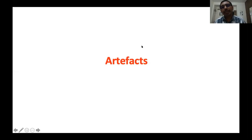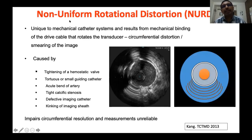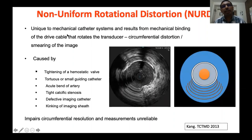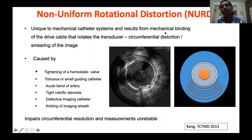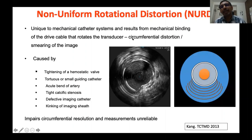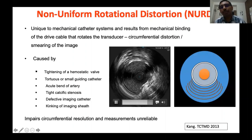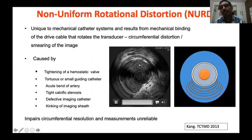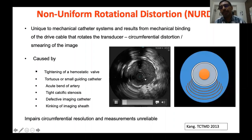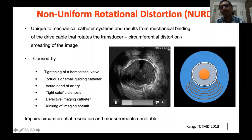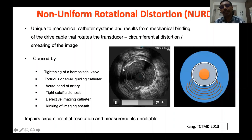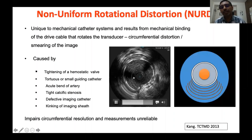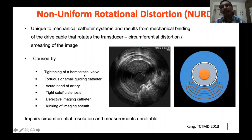This completes image interpretation. Now the last part — image artifacts. It is very important to understand image artifacts to avoid mistaking them for normal anatomical or pathological structures. The first artifact is Non-Uniform Rotational Distortion (NURD) — unique to mechanical systems. It results from mechanical binding of the drive cable that rotates the transducer, causing circumferential distortion or smearing of the image. If part of the rotation is constrained, it produces an onion peel-like appearance — that is non-uniform rotational distortion.